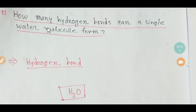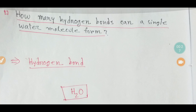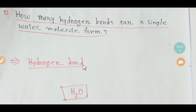Welcome to Chemistry Tutorial 360. Today we are going to find out the answer to the question: how many hydrogen bonds can a single water molecule form? Many people search this question on Google but can't get the right answer. Today we'll try to find out the right answer.